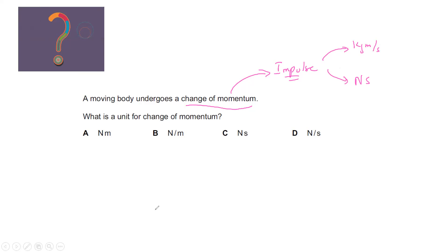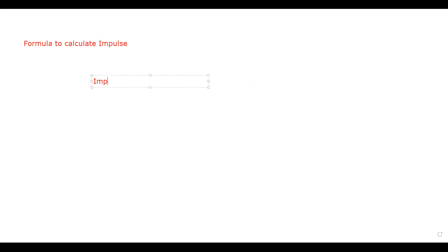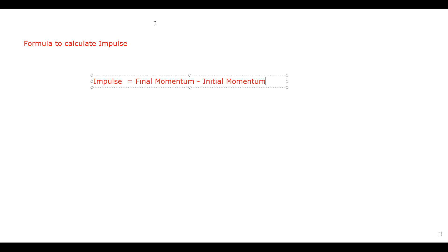Impulse has two units because there are two formulas to calculate it. Formula one: impulse equals final momentum minus initial momentum. Formula two: impulse equals the product of force and time. I will give examples showing which formula to use based on the question.